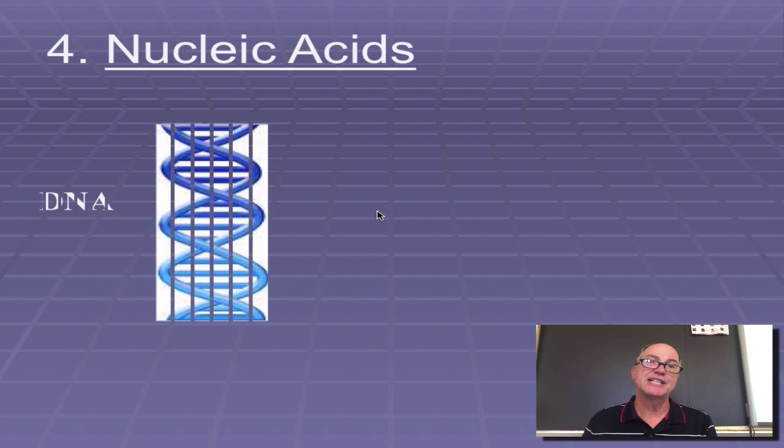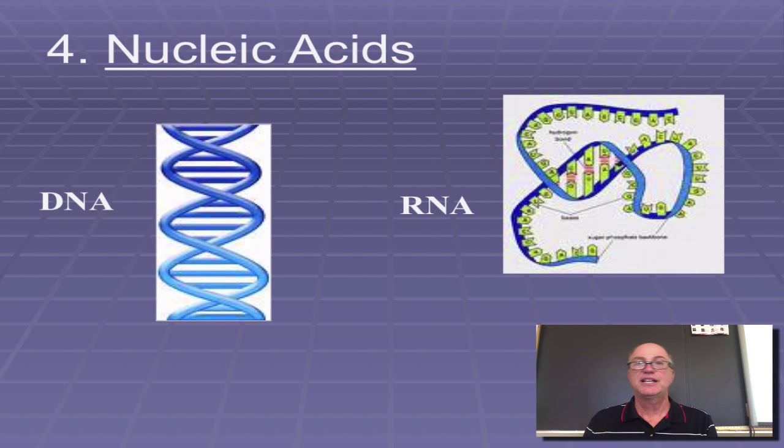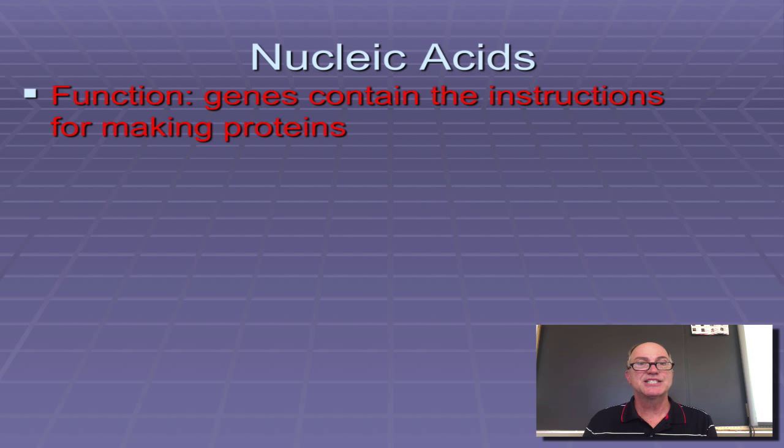Finally, nucleic acids: DNA and its cousin, RNA. Nucleic acids have a major function in that they are the genes that contain the instructions in our body to make proteins.